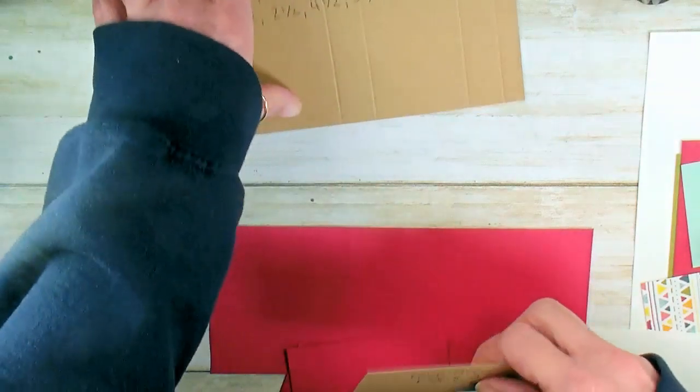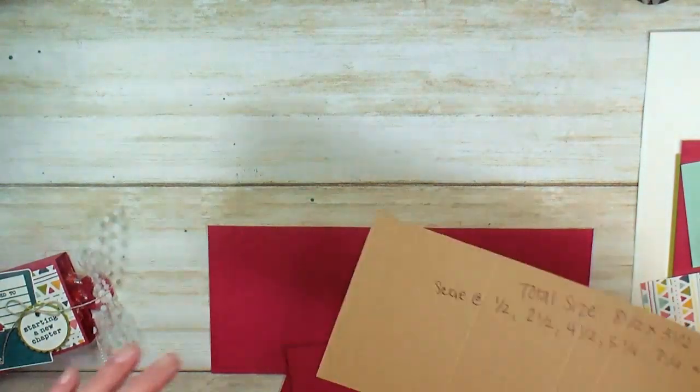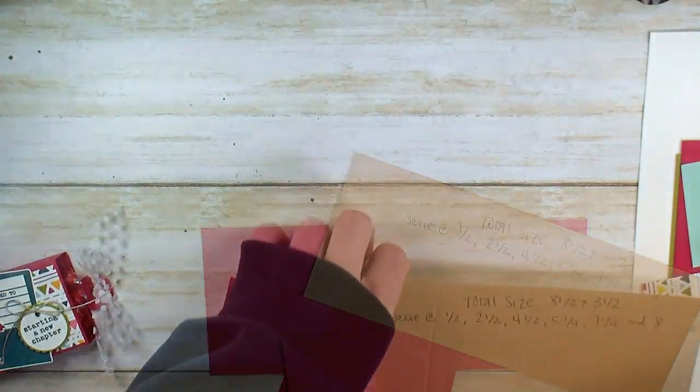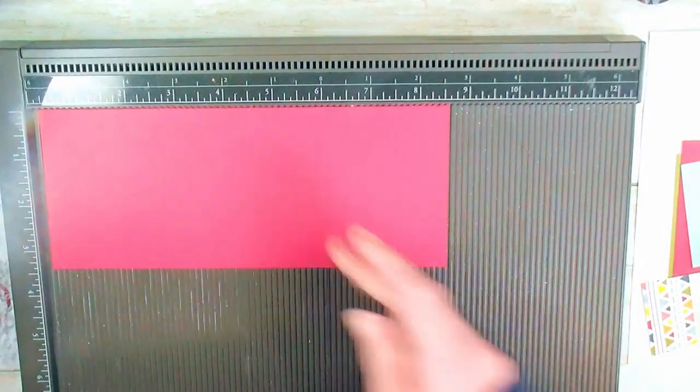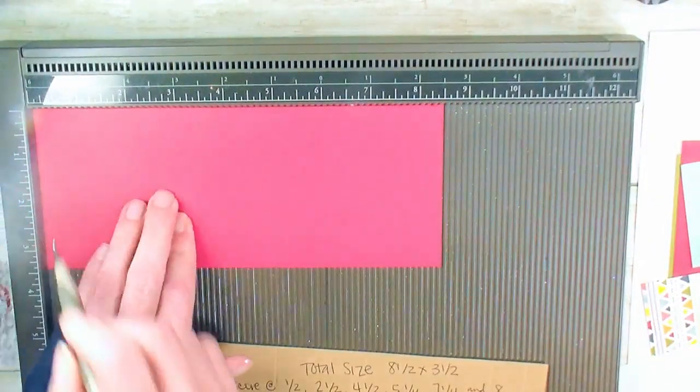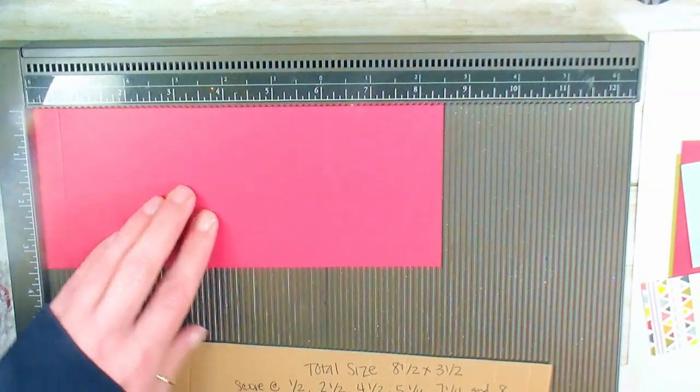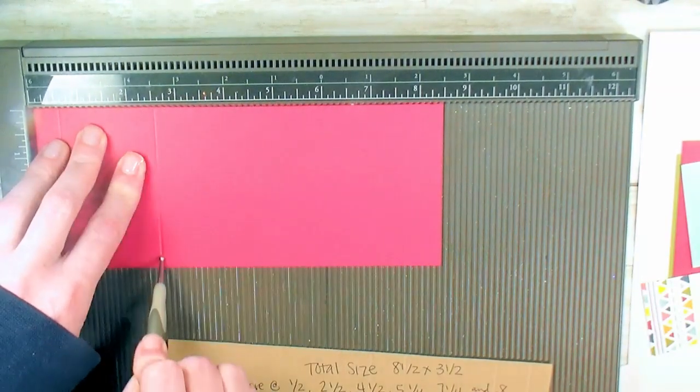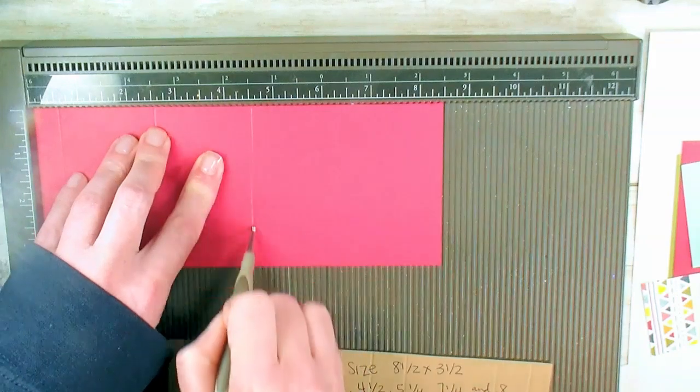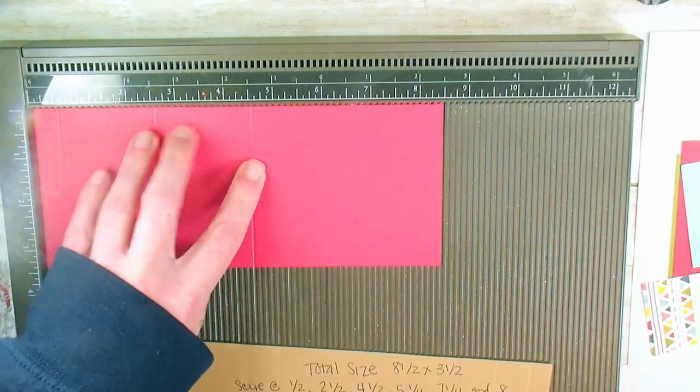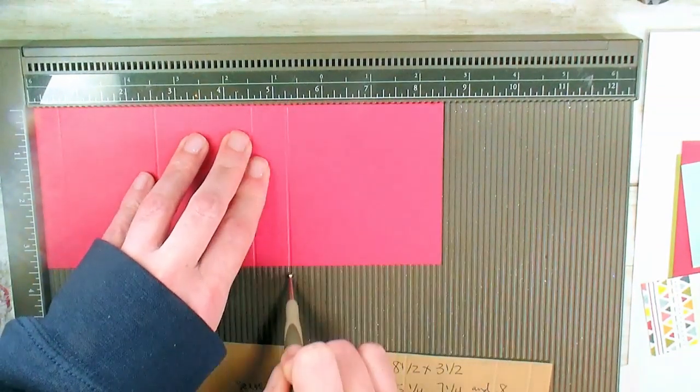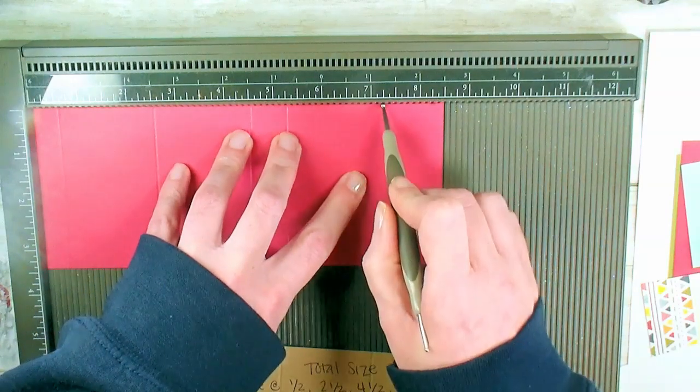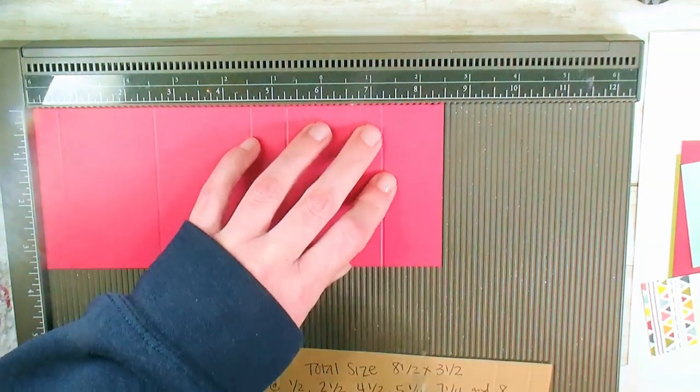Let's grab a Simply Score tool, and we're going to score according to our template. Pop the lovely lipstick in on the 8 1⁄2-inch side, and then score at 1 1⁄2, at 2 1⁄2, at 4 1⁄2, at 5 1⁄4, at 7 1⁄4, and at 8 inches.